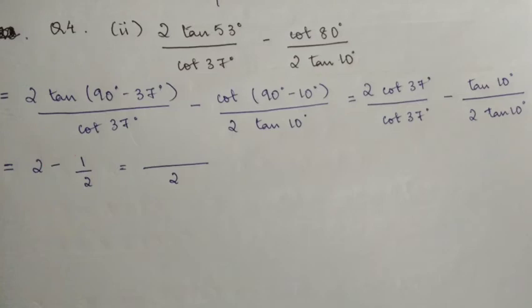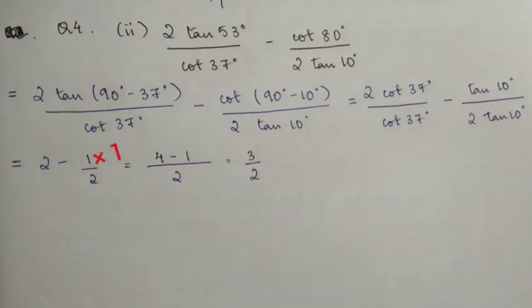So you have 2 minus 1/2. In the next step, we solve 2 minus 1/2 by taking LCM which is 2. Multiplying: 2 times 2 gives 4 in the numerator, and 1 times 1 gives 1. So you get (4 - 1)/2, which equals 3/2, and that's the final answer.